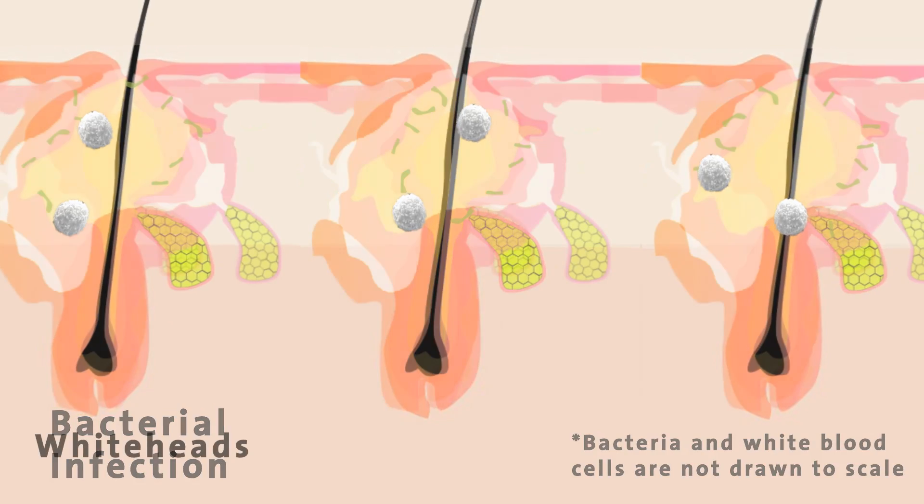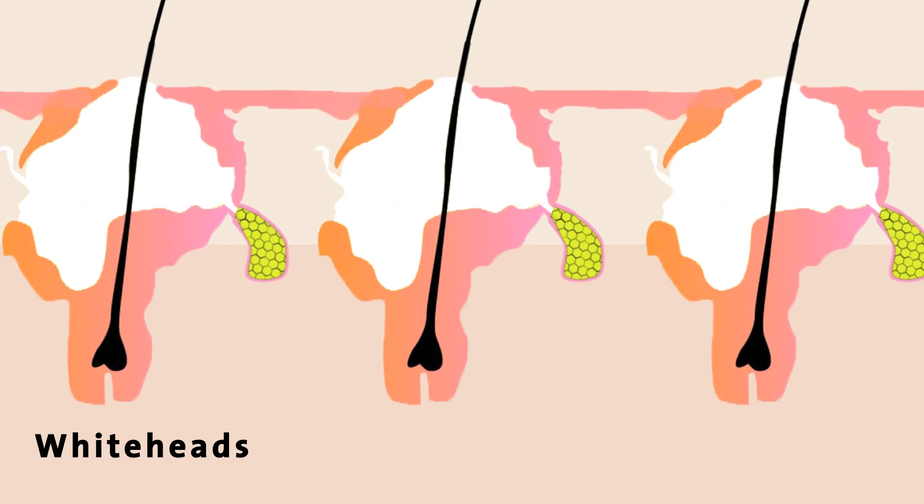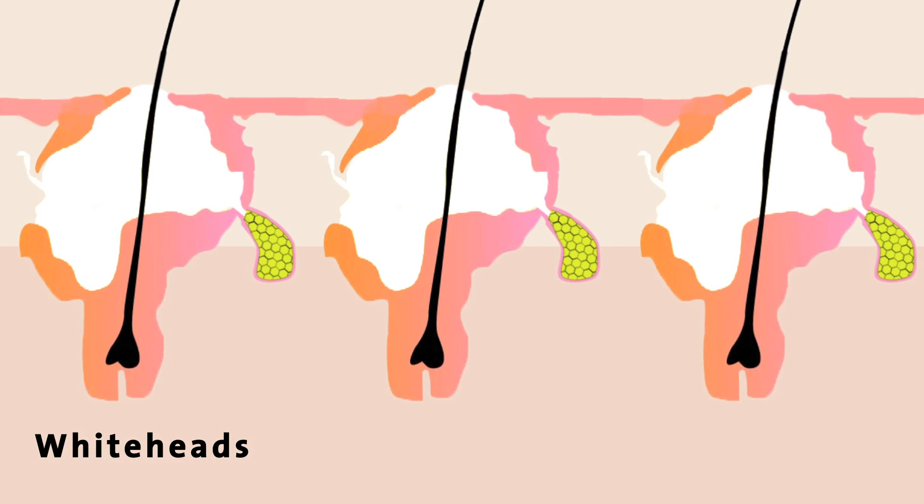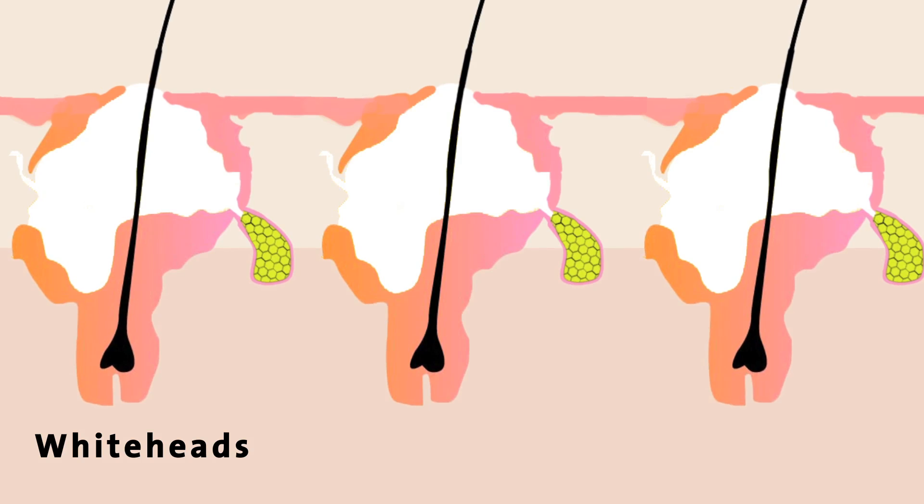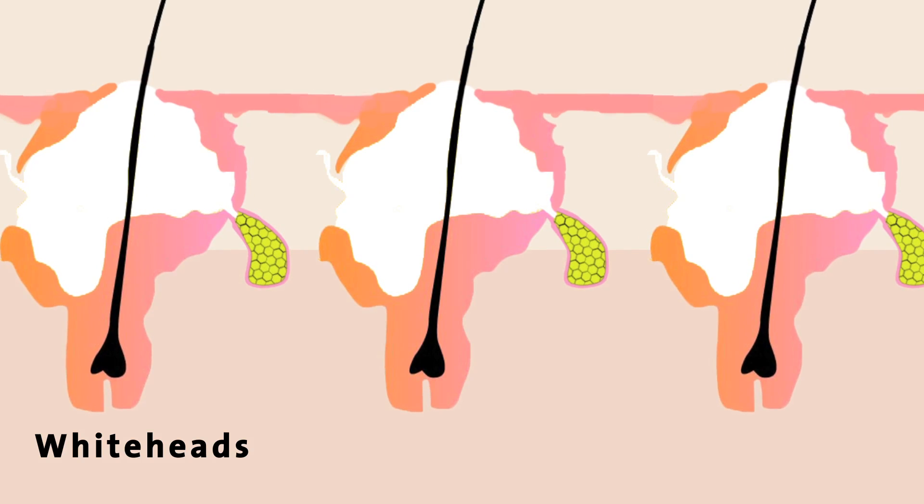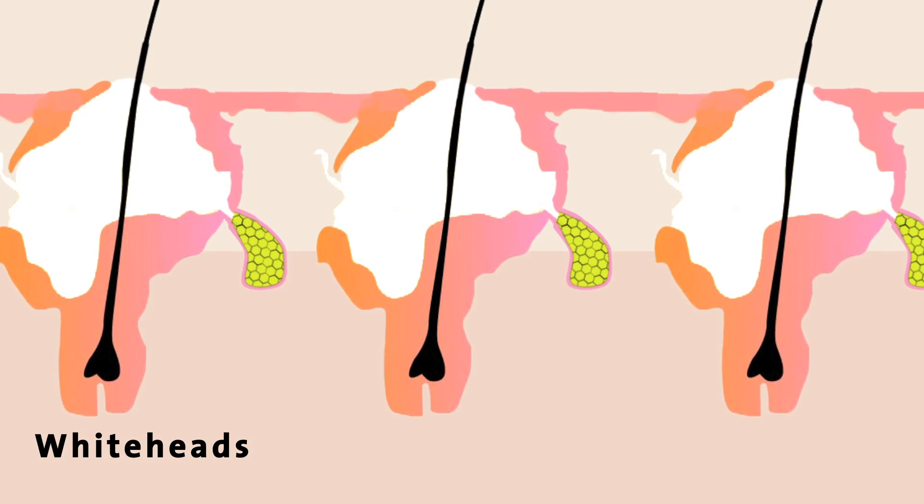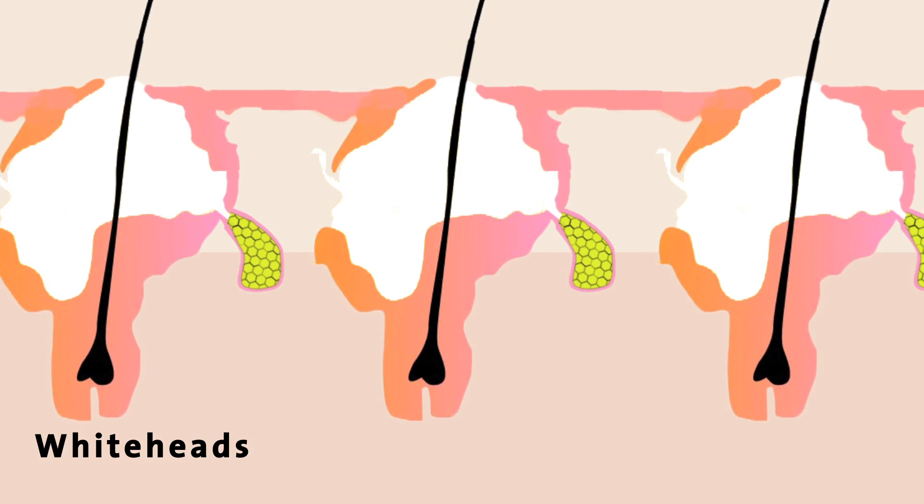These dead white blood cells, along with dead skin cells and some bacteria, form a white liquid known as pus. A pimple forms when the excess oil and dead skin cells clog up and block the opening of the pore. This type of pimple is called a whitehead.